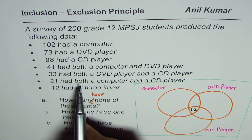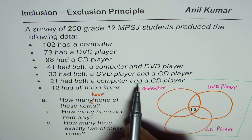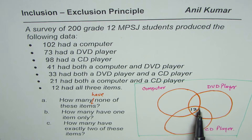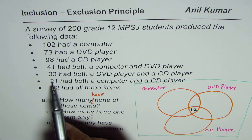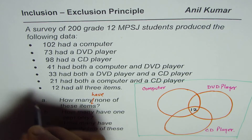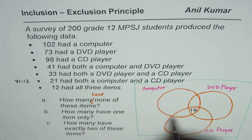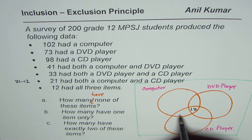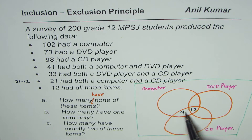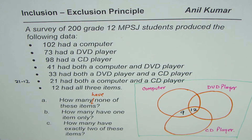Next, 21 had both a computer and a CD player. That intersection should total 21, but 12 are already in the center, so we do 21 minus 12, which gives us 9. We place 9 in the region for computer and CD player only. You can check: 9 plus 12 equals 21. Correct.